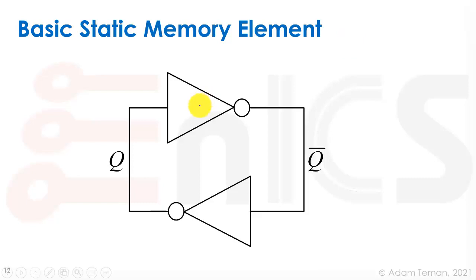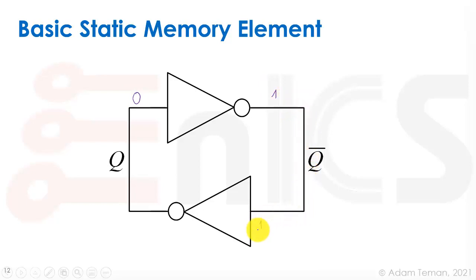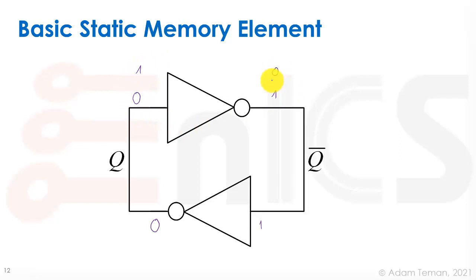What we have here is a pair of cross-coupled inverters, which is a really ingenious idea. Cross-coupled means that this inverter drives an output that is then fed back to the input of another inverter. If we have a 0 on the input to the first inverter, we get a 1 at its output, which propagates as a 1 to the input of the second inverter. The output of that is a 0 — so we get a 0 on both sides. That's a bistable element.